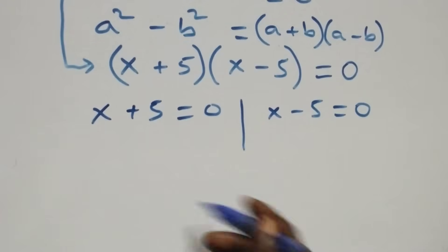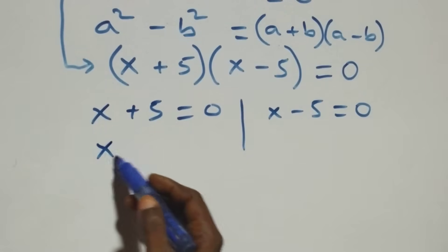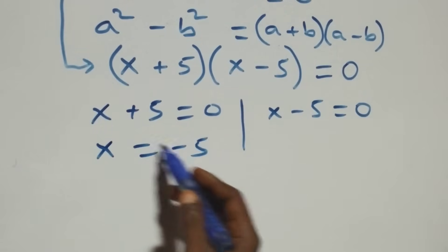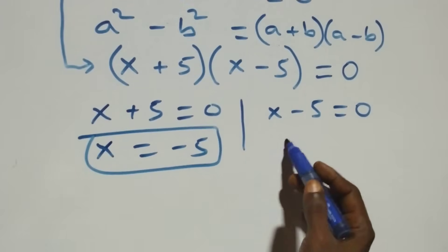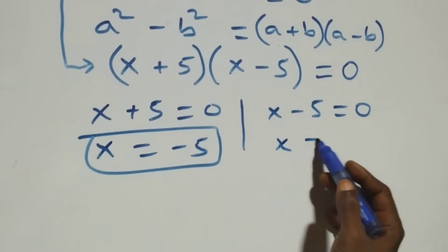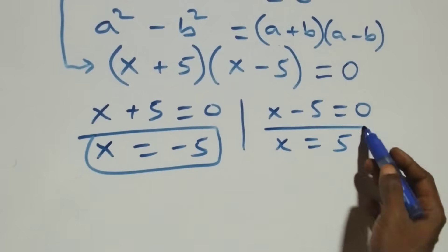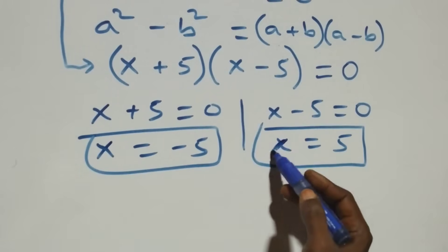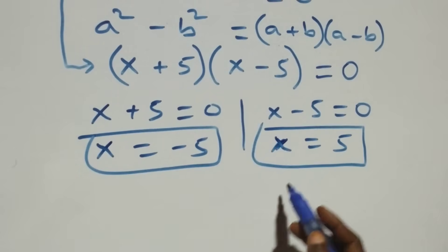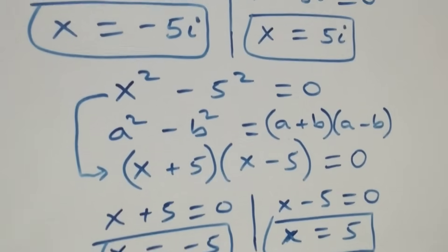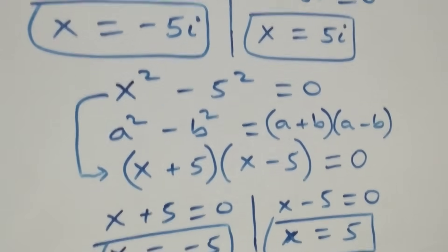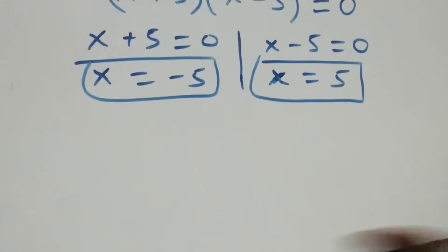Solving these: x equals minus five, which is a real solution, and x equals five, which is also a real solution. So here we have two real solutions. Altogether we have four solutions: two real and two complex.